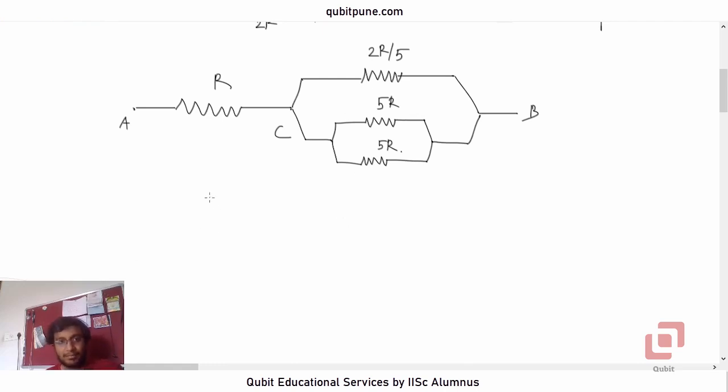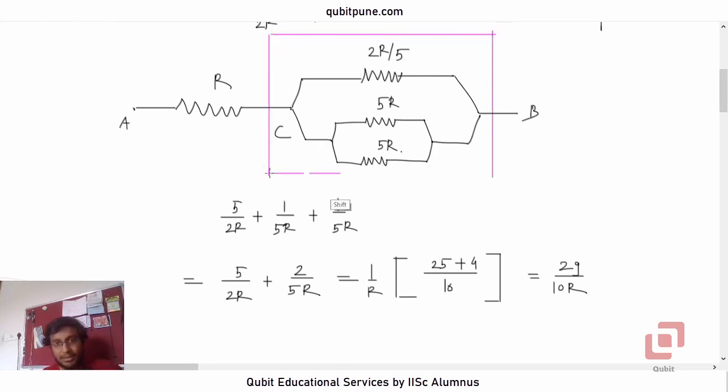Let us take the reciprocals and add them. 5 by 2R plus 1 upon 5R, or it will be 5 by 2R plus 2 by 5R. So 1 upon R into 5 by 2 plus 2 by 5. So that will be 25 plus 4 upon 10R. Cross multiply and take the LCM. So that is 29 by 10R. So what will be the net resistance? RBC is 10R by 29.